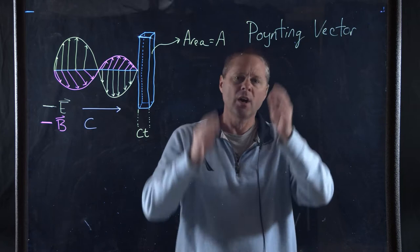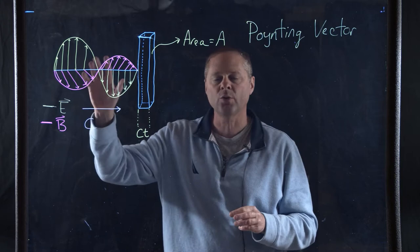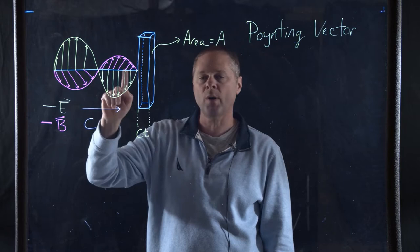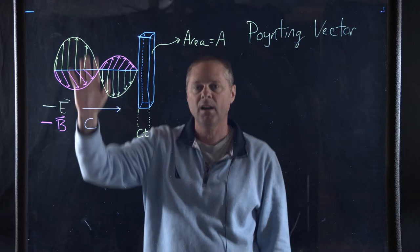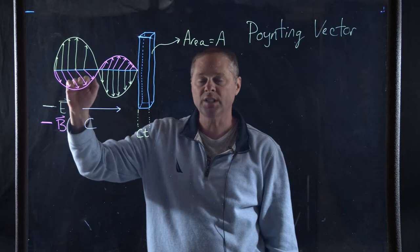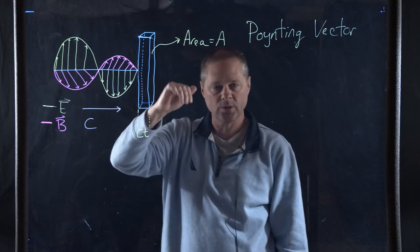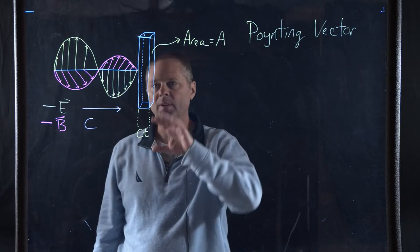The Poynting vector is a vector that's going to describe the intensity of an electromagnetic wave. What we have here is an electromagnetic wave. The green curve represents the electric field which is traveling in the plane of the board going this way. The pink line represents the magnetic field which is going in and out of the plane, towards you folks, back towards me in the pink line. And it's traveling in this direction.